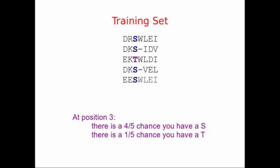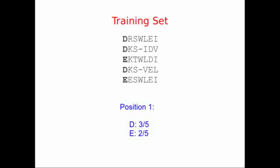At position 3, there's a four-fifths chance of amino acids. Four of our amino acids are serines. And there's a one-fifths chance there's a threonine. So we can just go through the whole alignment and score what amino acids occur at which position.